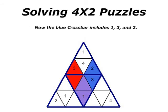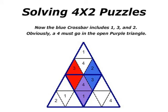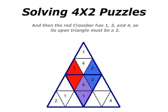Now, the blue crossbar includes 1, 3, and 2. Obviously, a 4 must go in the open purple triangle. And then, the red crossbar has 1, 3, and 4, so its open triangle must be a 2. The middle of the Trism is solved already.